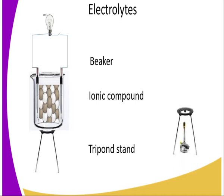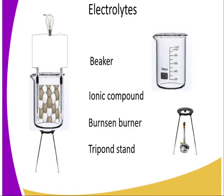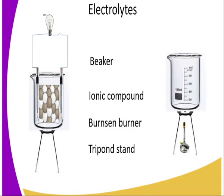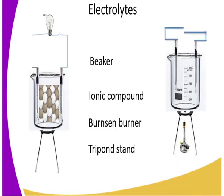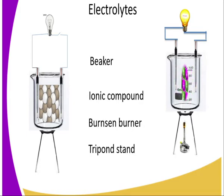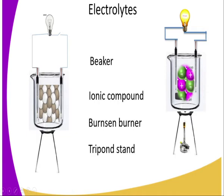But if we add heat — that is, we heat the ionic compound using a Bunsen burner — and we connect this to an external circuit, once we heat the ionic compound the ions become mobile and they move throughout the substance, migrating from one point to another. This causes the bulb to light, so you'll be able to observe that the bulb lights in that case.